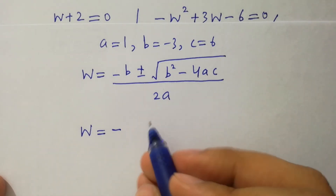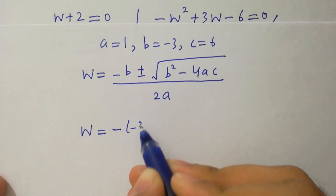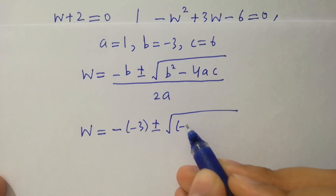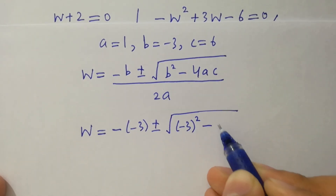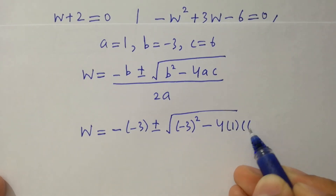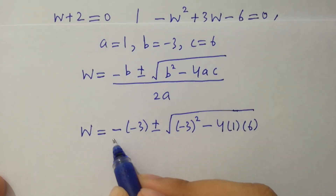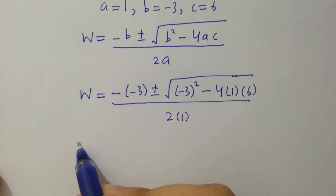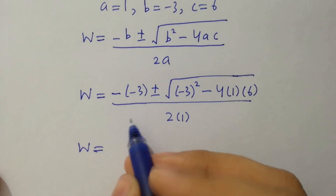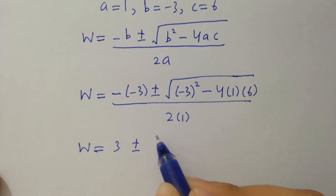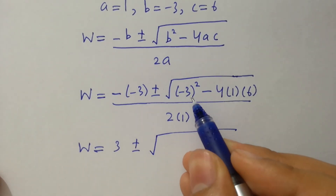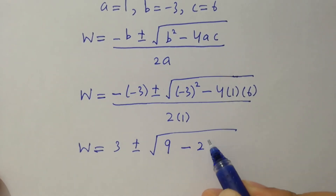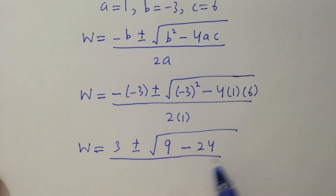Putting in the values: w equals minus of minus 3, plus or minus square root of minus 3 squared minus 4 times 1 times 6, over 2 times 1. This gives w equals 3 plus or minus square root of 9 minus 24, over 2.